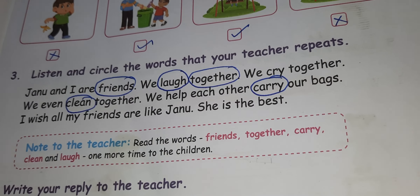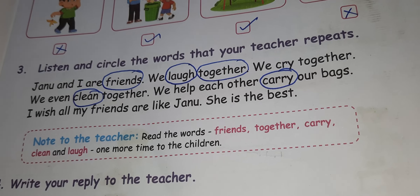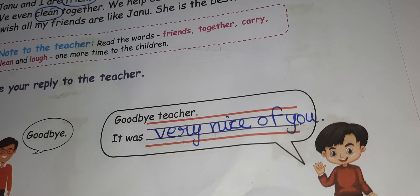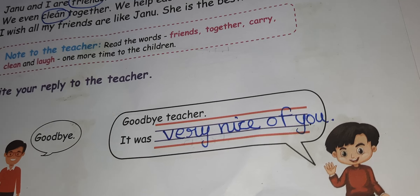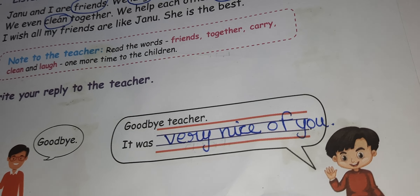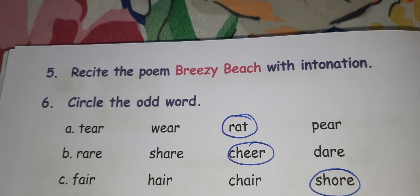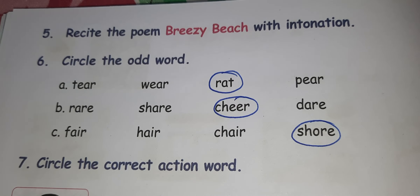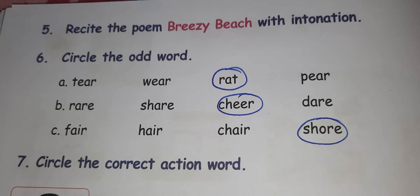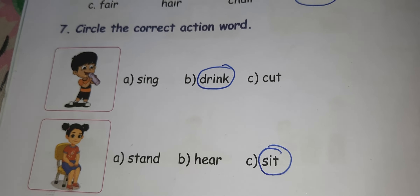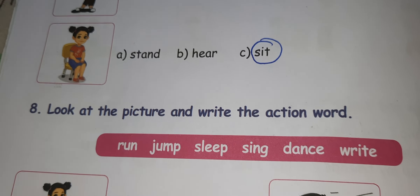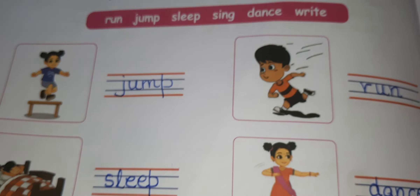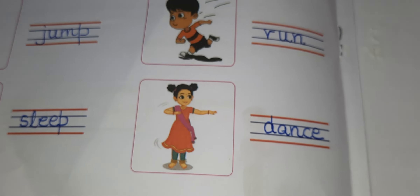The third one: circle the reader report - the teacher has given their friends so you want to circle it. Write a reply to the teacher - Goodbye. Goodbye teacher, it was very nice of you. You can write your own reply. Circle the odd words: rat, cheer, and show. There are action words: drink, sit. Eighth one: look at the picture and write the action words - jump, run, sleep, and she dances.